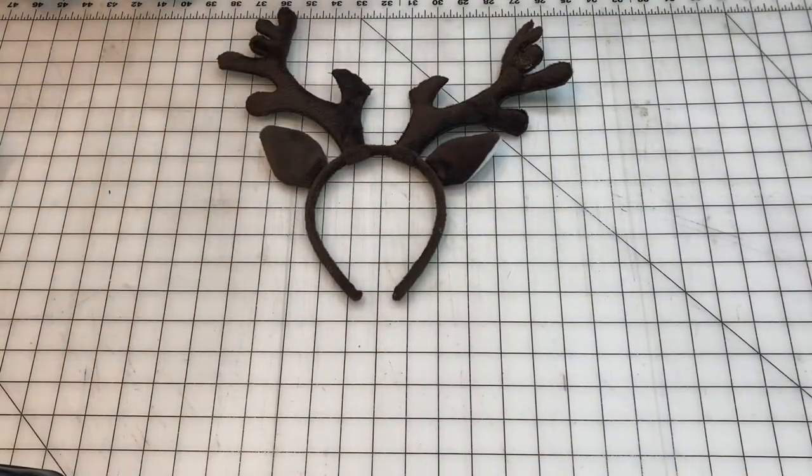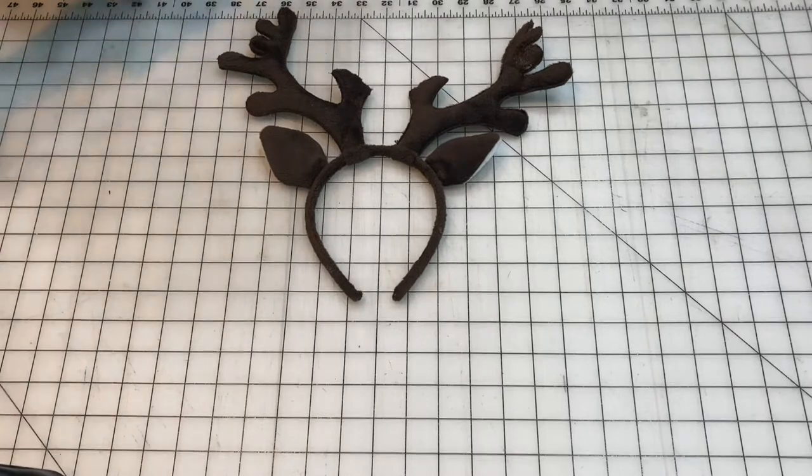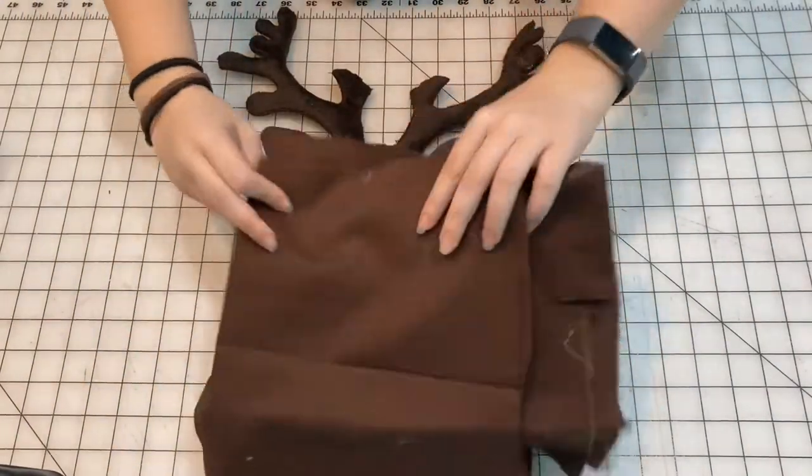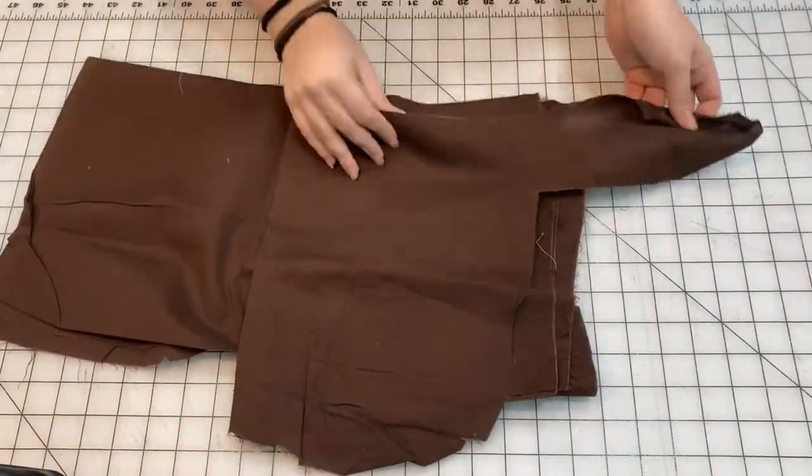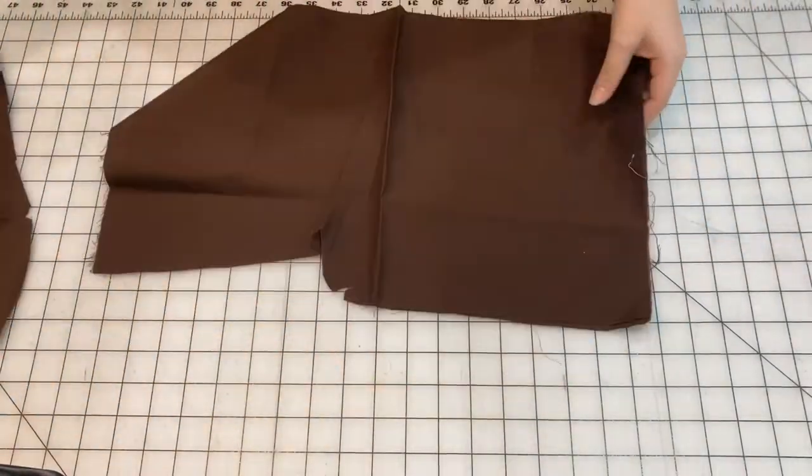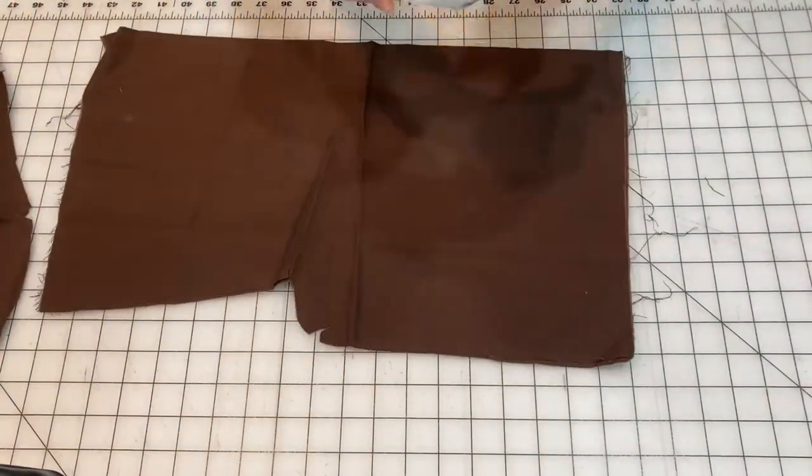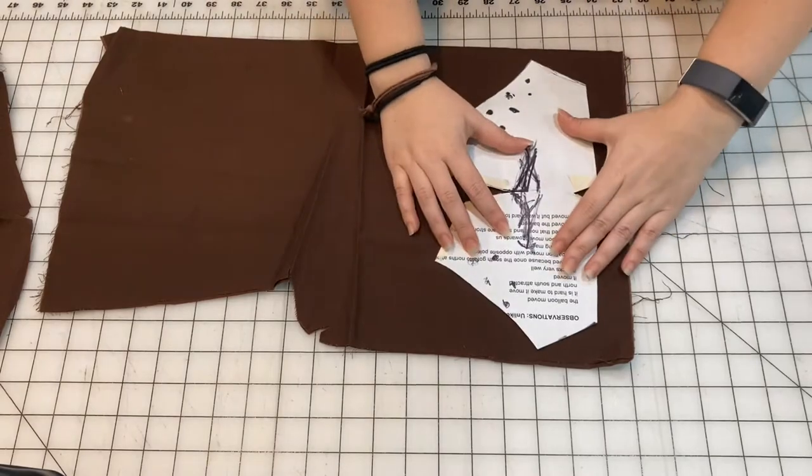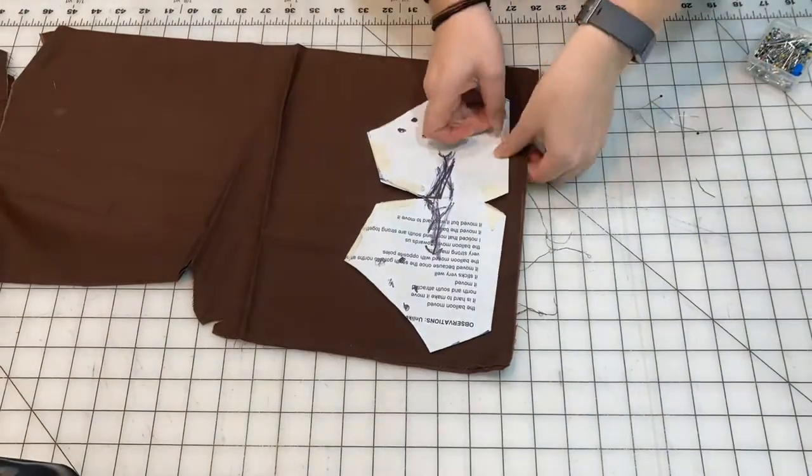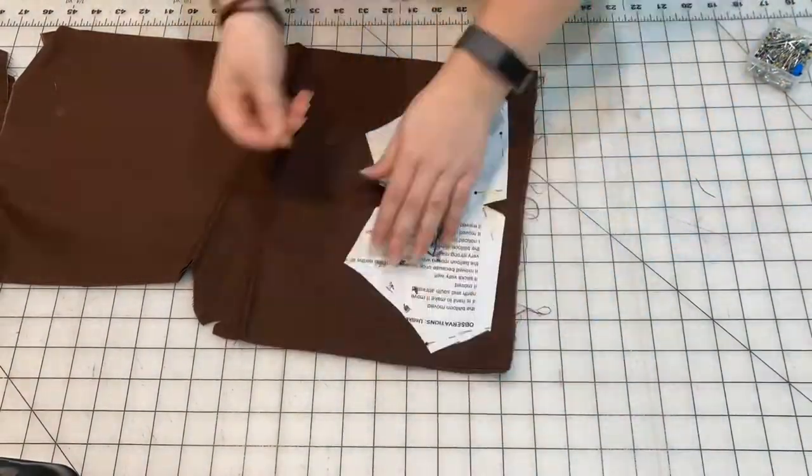Here are the antlers I'll be using and I managed to find this brown fabric in my fabric pile. It matches close enough to the color. I'm just going to grab a small piece of that fabric and place my pattern on top of that and cut it out.